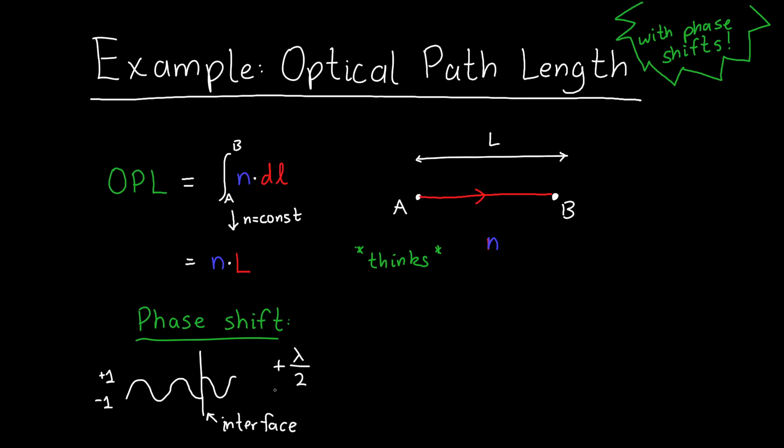Now, phase shifts don't have to be just a half wavelength. They can be a smaller amount or a larger amount. Typically, they are going to be a half wavelength because this is equivalent to a negative sign, equivalent to multiplying by negative one, and the number negative one turns out to be pretty common when you deal with optical reflection and transmission.